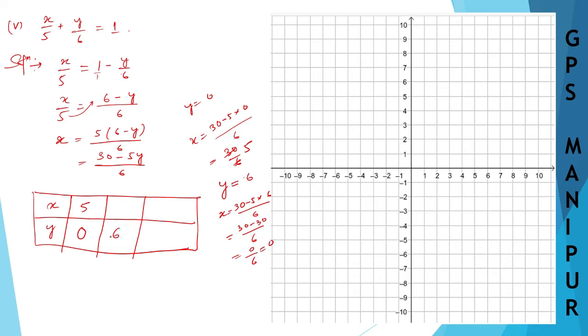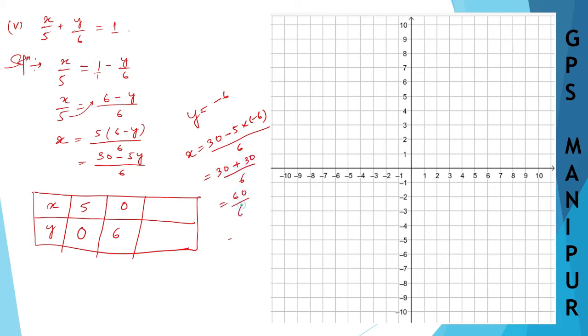So when y is 6, x is 0. Now, what next number? Let me rough all these things. Next number, any number that you can take. You can take any number which is suitable and the answer must not be fraction. Don't go for fraction number, you go for integers. Now, instead of y, what will happen if I put minus 6? y is equal to minus 6, so x will be equal to 30 minus 5 into minus 6 divided by 6, which will be 30 minus into minus plus, 30 divided by 6. 30 plus 30 is 60 divided by 6, which is 10. So when y is minus 6, x is 10.